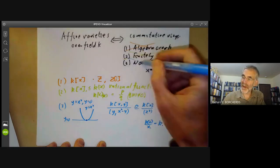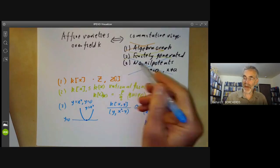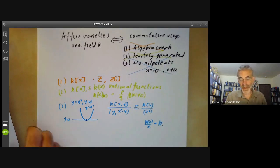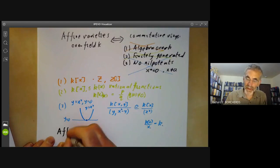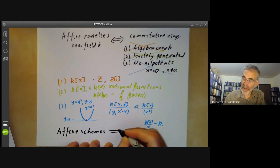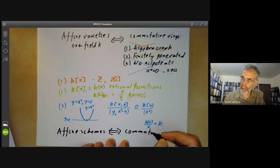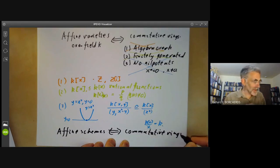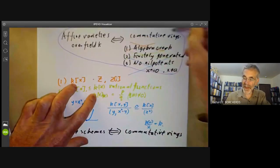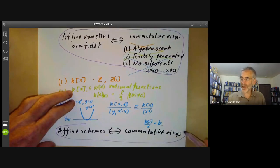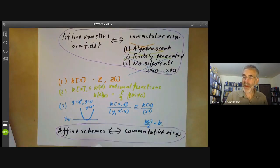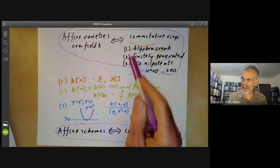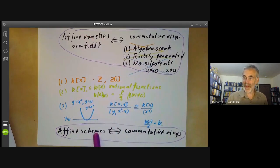Nilpotent elements mean you can't represent the ring as functions taking values in a field. But this suggests we should drop the condition that commutative rings have no nilpotents. So what are we left with? We're left with all commutative rings. We will now define affine schemes, which correspond to all commutative rings. The idea is to imitate the way you construct affine varieties from rings, though we need to modify the construction a little because rings with nilpotents require extra care.